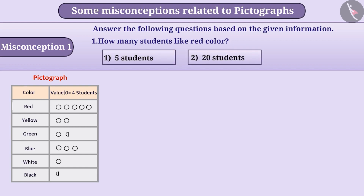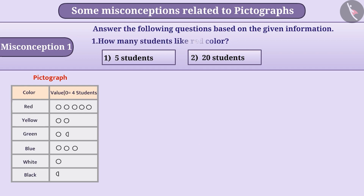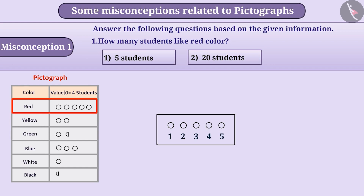Some children do not notice the value of the symbol given in a pictograph or ignore it, not understanding its importance. To find how many students like red colour, children count only the number of symbols in the row of red colour. Since five symbols are shown, they think five children like red colour and give the answer as option 1, which is incorrect.